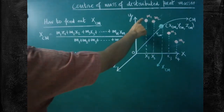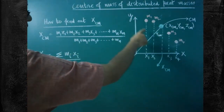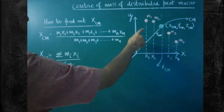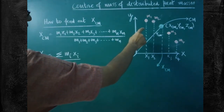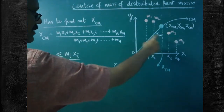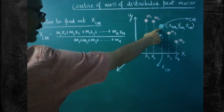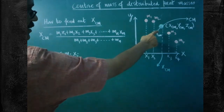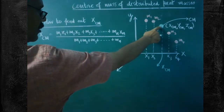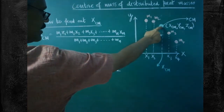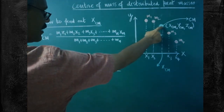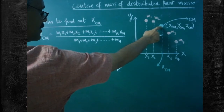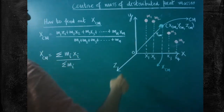Though these masses are distributed in space, for all of them we can identify one center of mass. This is approximately the location of the center of mass.